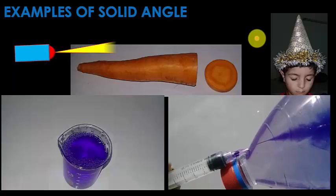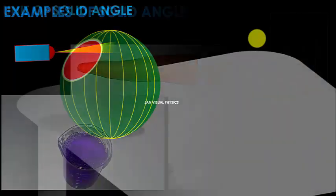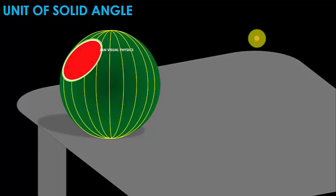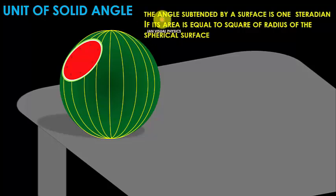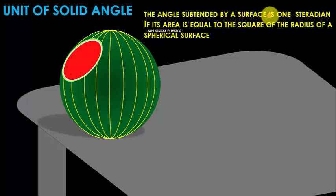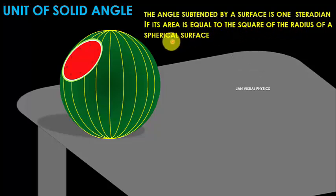There are a lot of examples of solid angle in our daily life. Now we discuss the unit of solid angle. The unit of solid angle is steradian. One steradian is the angle subtended by a surface whose area is equal to the square of the radius of a spherical surface.